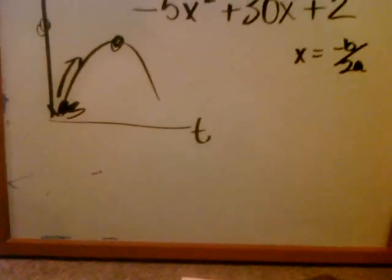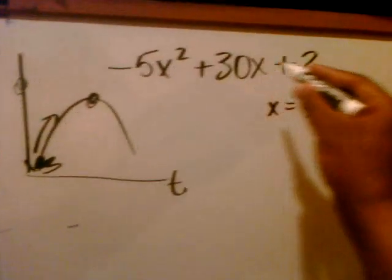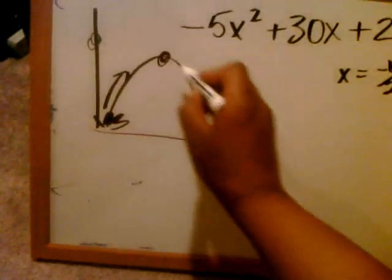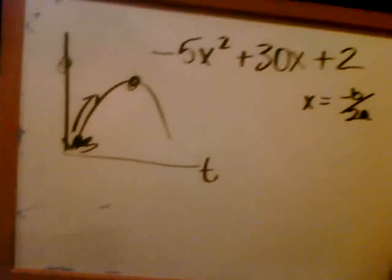This axis is going to be our time. This is going to be the equation that's going to define our projectile motion here, which will be in the form of a parabola.